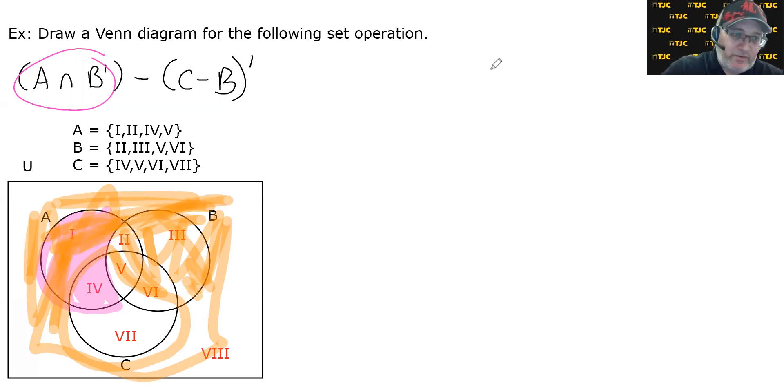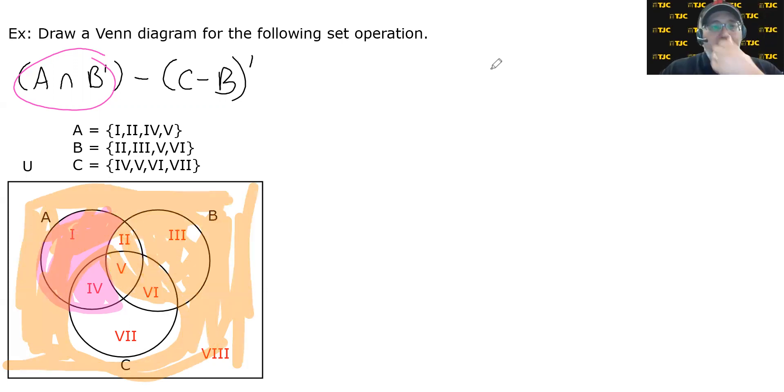This is where it might get a little tricky. C minus B means I start with C and remove where it overlaps B. C minus B is here. But then I want the complement of that, which is everything except those two. So I need the pink minus the orange. So if I took the pink and threw away anything that was also orange, I'm going to speculate that the answer is just region four. I may be right. I may be wrong.